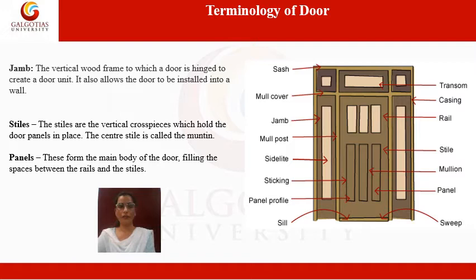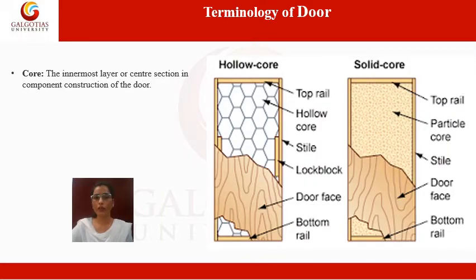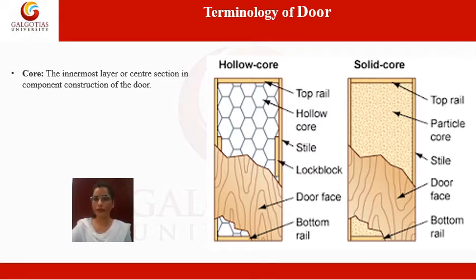The core is the innermost layer or center section in the construction of the door. There are two types of core: hollow core and solid core. You can see the top rail, and in hollow core construction the interior is hollow, while in solid core construction the interior is filled solid.